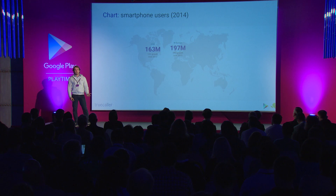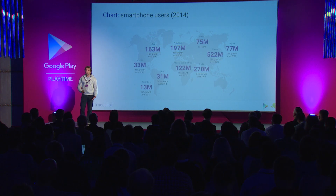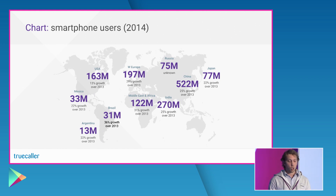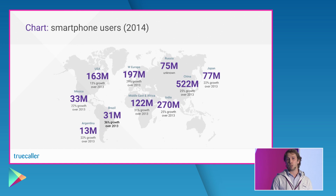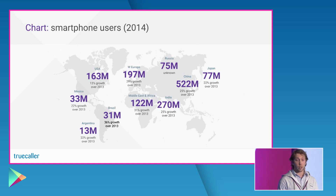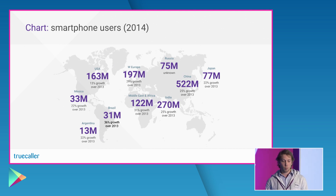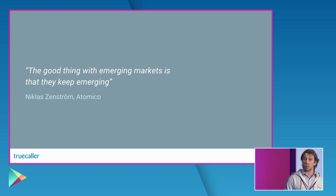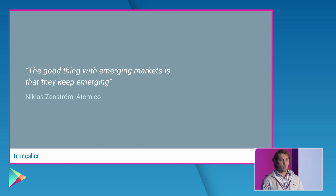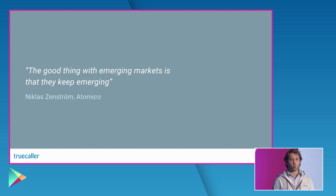What we tend to underestimate is the potential that all the other markets can have in our distribution. In China at the end of 2014 there were 522 million smartphone users, in India 270 million, and in the MENA region 122 million. We also need to remember that the next billion internet users is coming from those regions, so they are definitely going to keep experiencing huge growth.